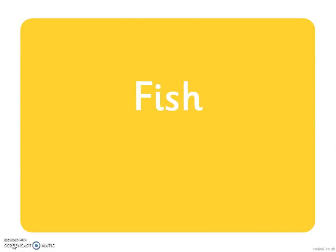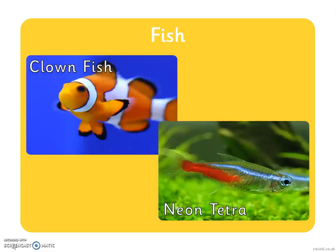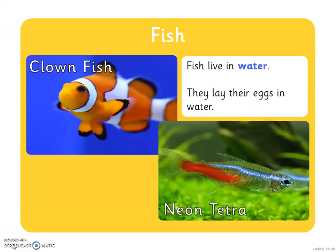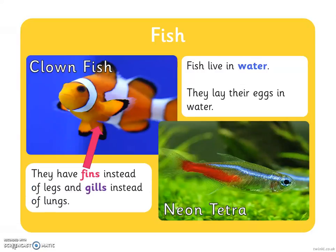The fourth group are fish. Here are some pictures of different fish. There is a clown fish and a neon tetra fish. Fish live in water, therefore they lay their eggs in water. They have fins instead of legs to help them swim and gills instead of lungs to help them breathe.